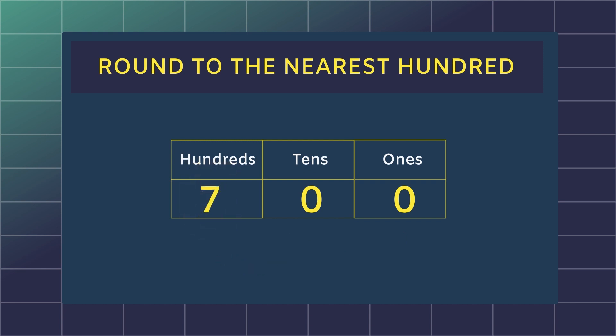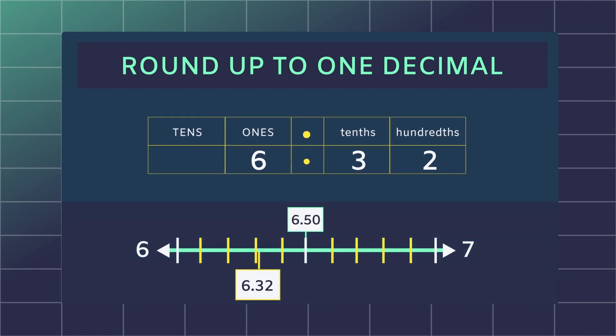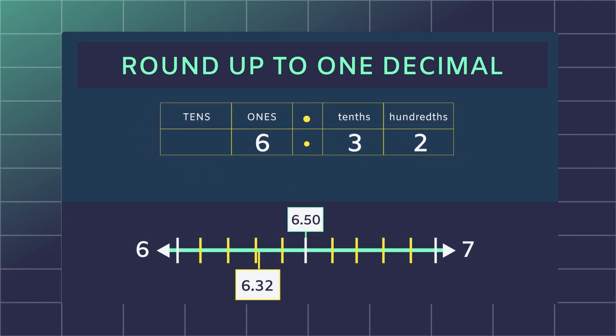Let's put this into practice with decimals. If we want to round up 6.32 to 1 decimal place, which means 1 digit after the decimal point, we would either round it down to its lower value, 6.3, or round it up to the upper value, 6.4. Depending on the value of the second digit after the decimal point, to do this effectively, let's use the number line.